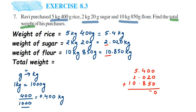Now add: 0 plus 0 is 0, 5 plus 2 is 7, 8 plus 4 is 12 so write 2 and carry 1. Then 5 plus 2 is 7, plus 1 carried is 8, and we have 1, giving 18.270. So 18.270 kg is the total weight of Ravi's purchases. I hope this question is clear — if you have any doubt, drop a comment and I'll try to make a video on it. Thank you so much for watching.